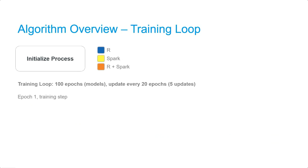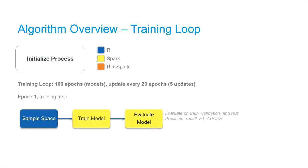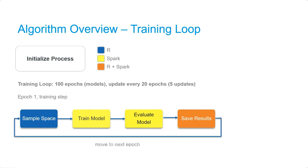We start with Epoch 1, which we'll categorize as a training step — meaning no updates will be made to the hyperparameter space. The first step is to sample one set of hyperparameters. Next, we take our training data and sampled parameters to train a model; Sparklyr's ML Random Forest Classifier is an example of this. After training is complete, we calculate several model evaluation metrics on all three datasets — some examples are Precision, Recall, F1, and AUCPR. Finally, we save our results, including saving model evaluation locally in R and the trained model to HDFS using Spark. With that, we move to the next epoch.